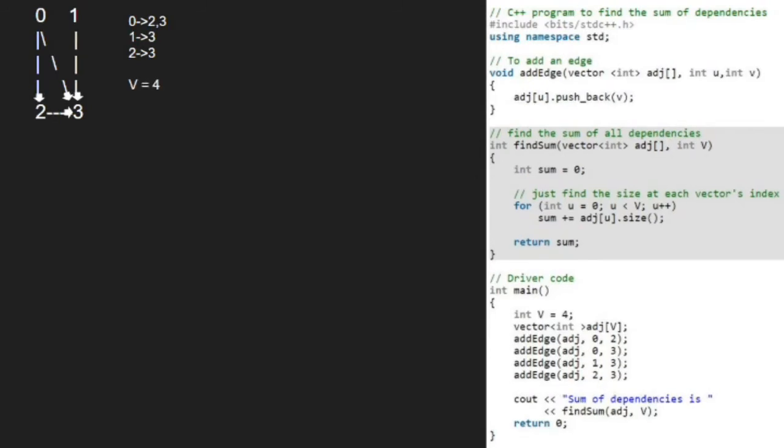Next we take a sum variable and initialize it to 0. Now, we run a for loop from 0 to the number of vertices i.e. 4 and find size of each vertices list and add it to sum.